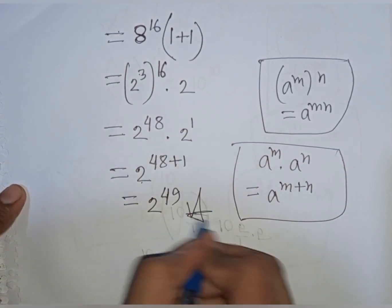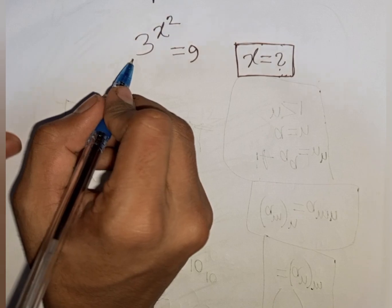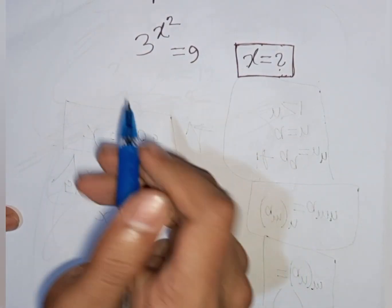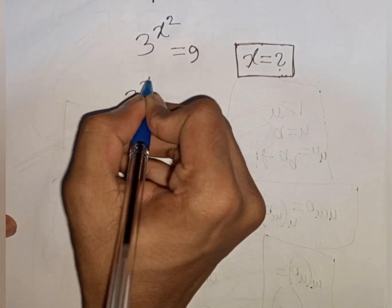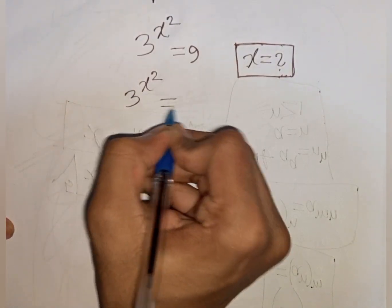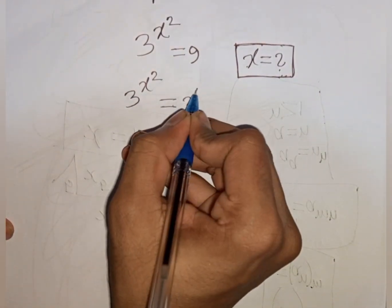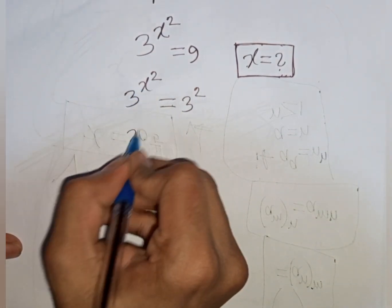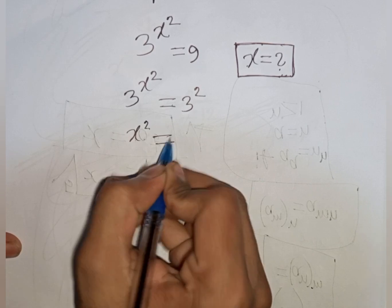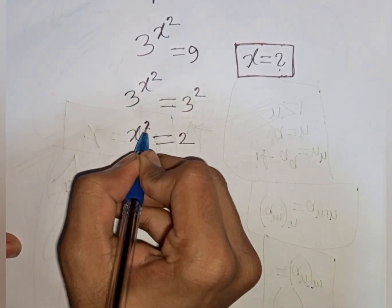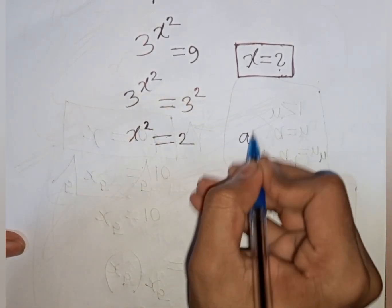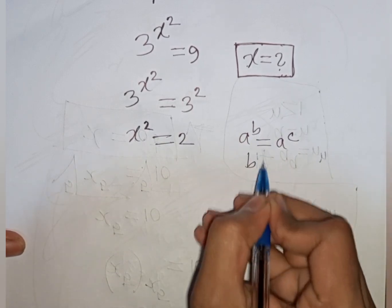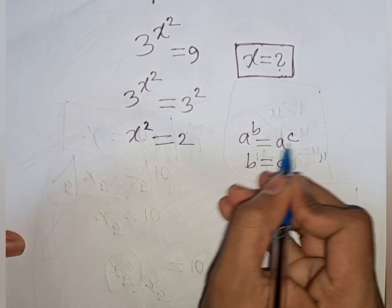How to solve 3 power of x square is equal to 9 — find the value of x. We have 3 power x squared equals 9, which can be written as 3 squared. Now 3 and 3 are the same base, so they cancel. Power x squared will be equal to power 2. According to the formula, a power b equals a power c means b equals c.